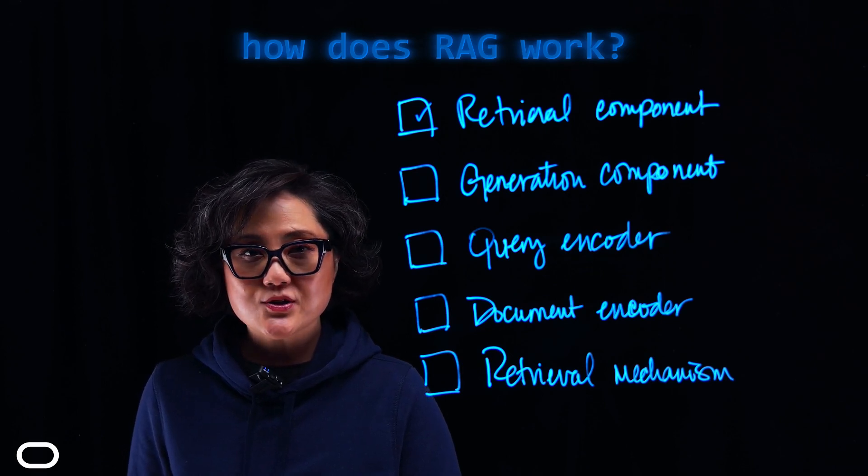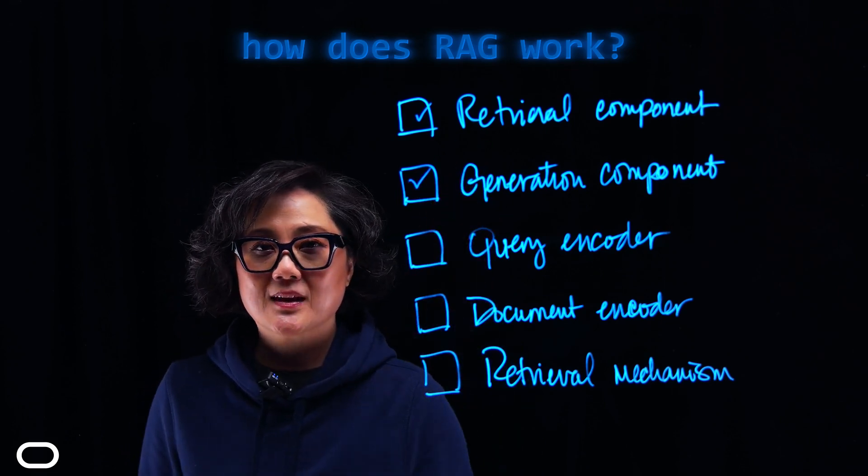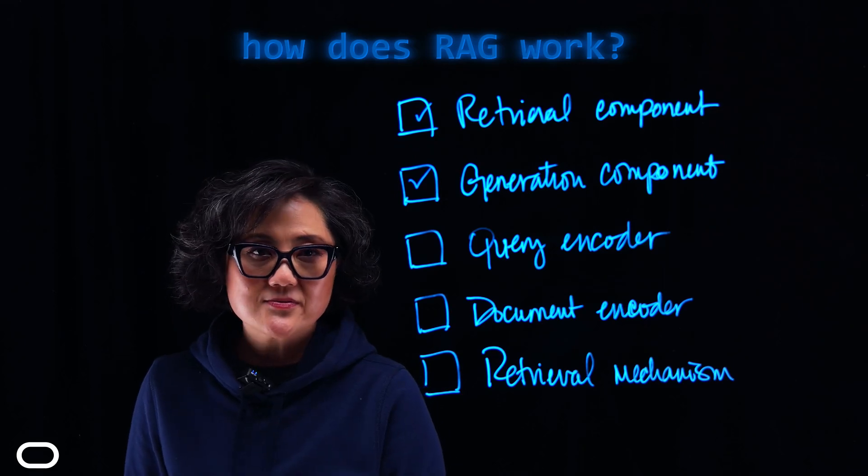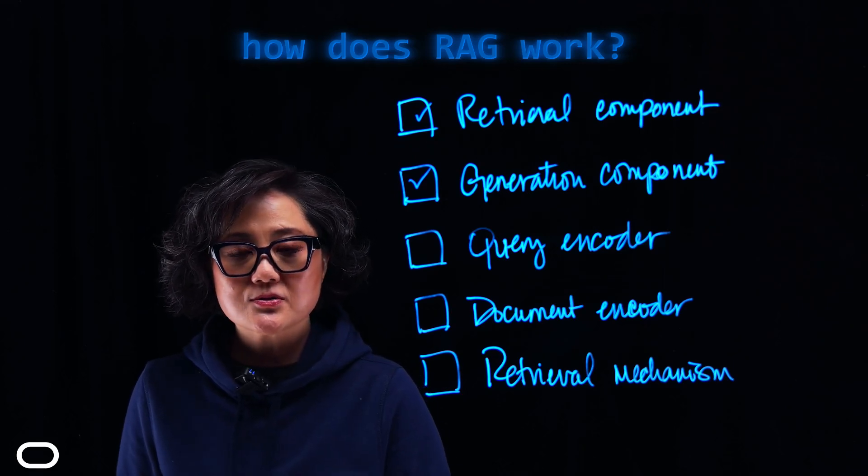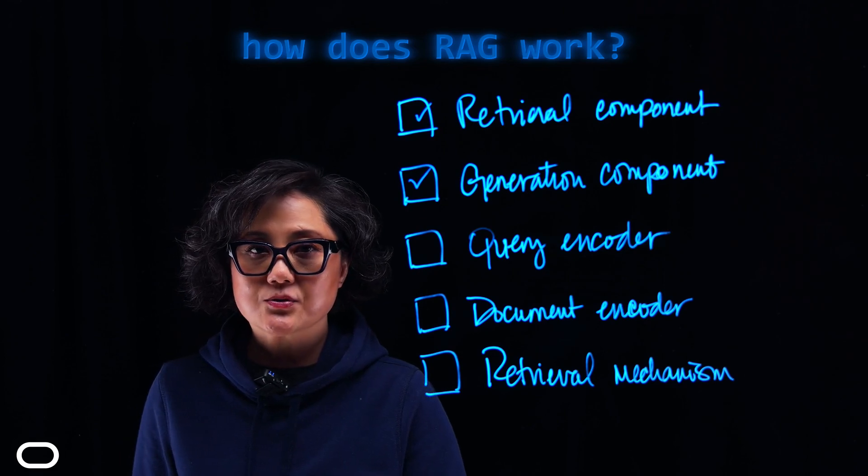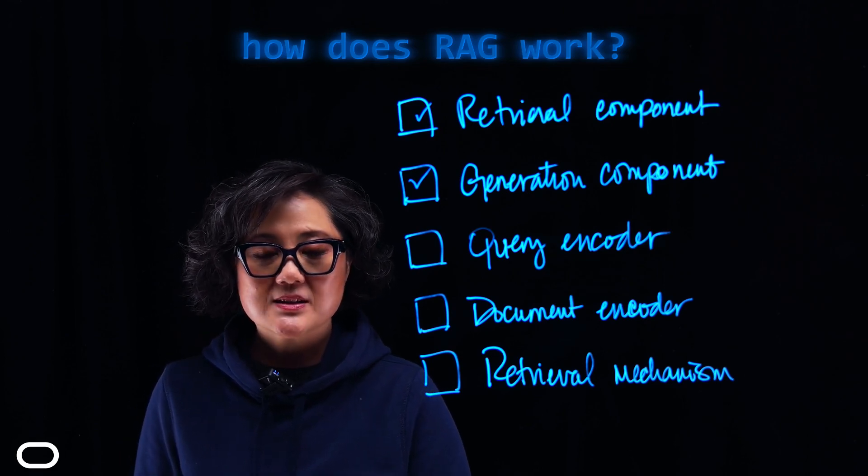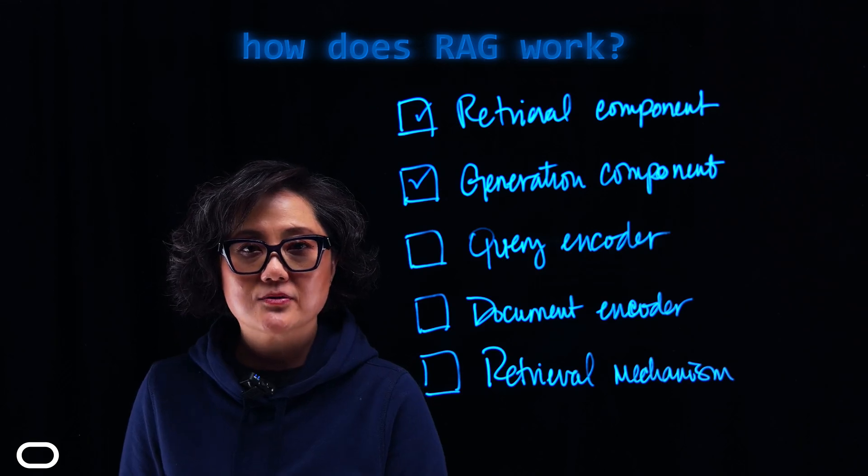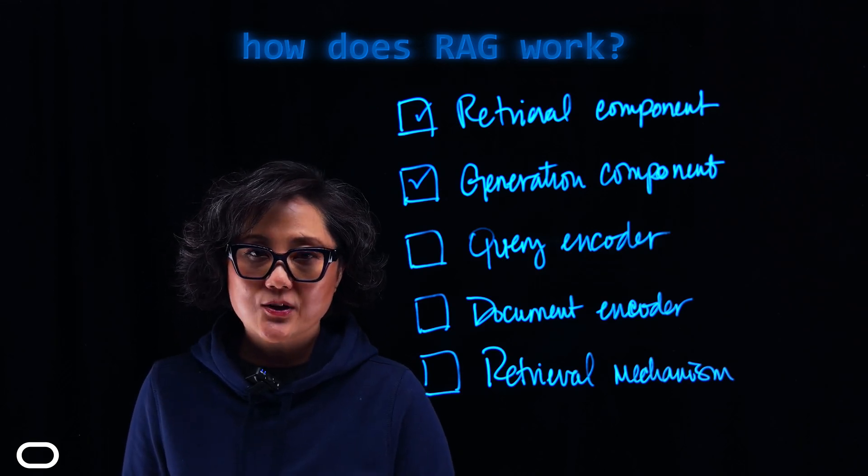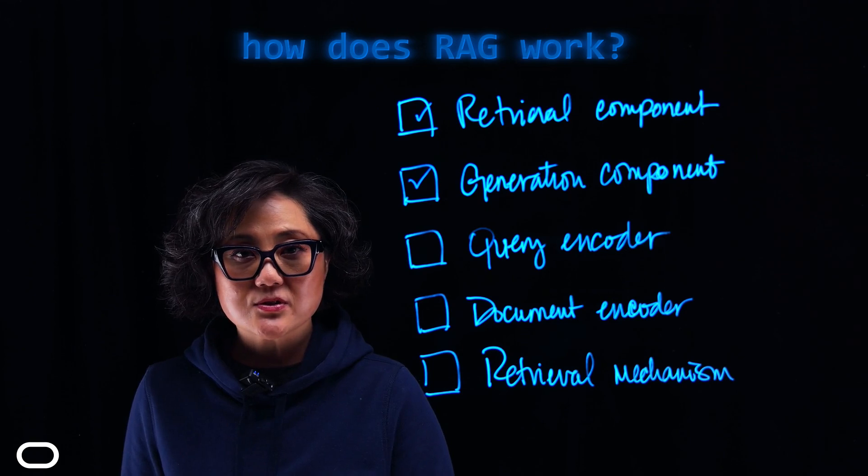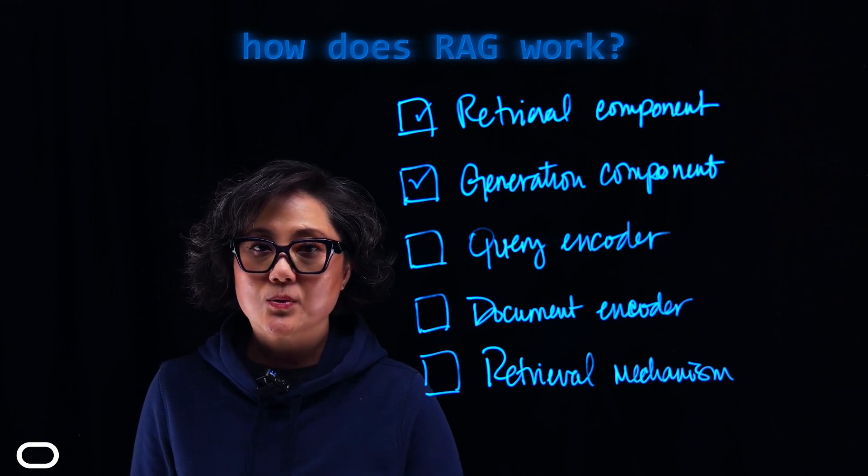Next, the generation component comes into play. Using the retrieved information, this part of the model generates a coherent and contextually appropriate response. Essentially, RAG leverages the power of retrieval to provide accurate information and the power of generation to craft well-formed responses.